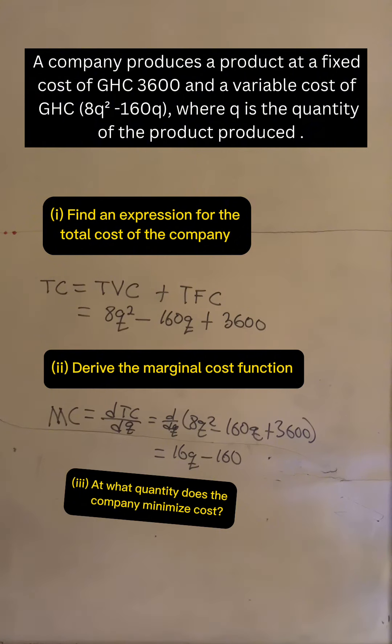To do this, we seek to meet the first order condition. We take the change in total cost with respect to change in quantity equal to 0.